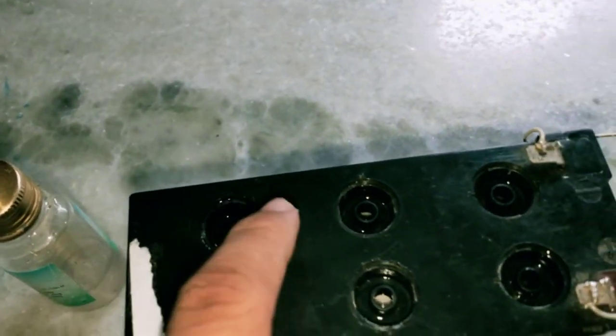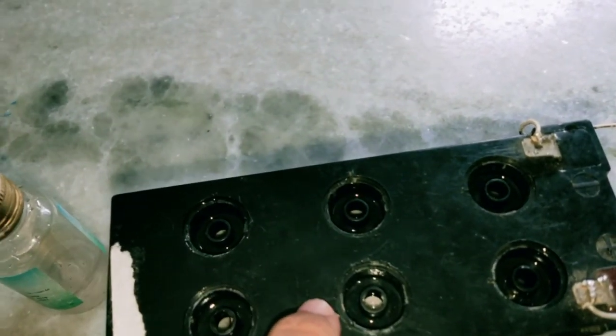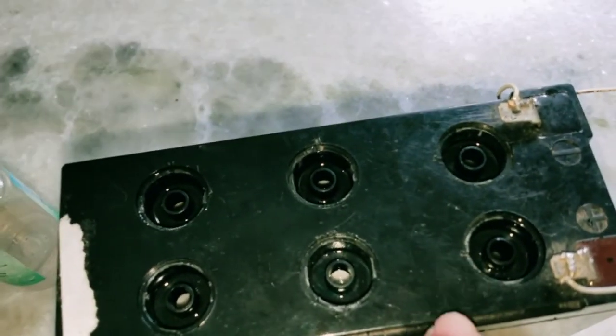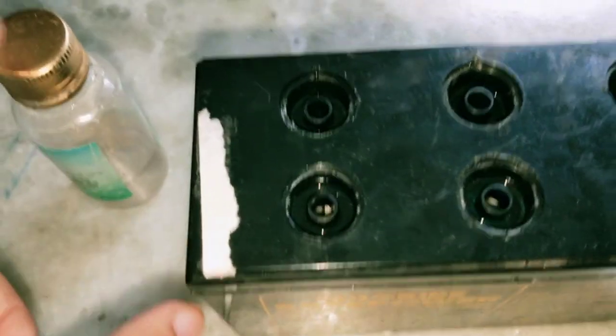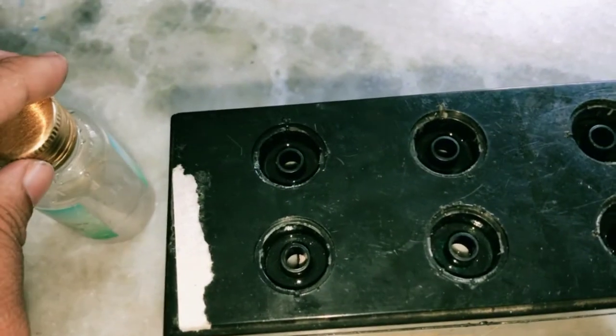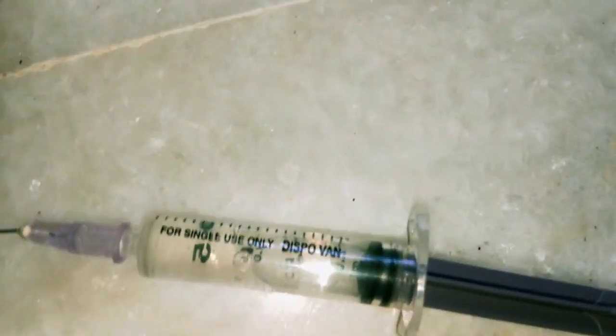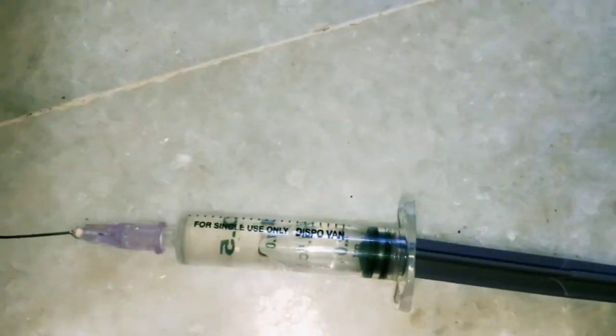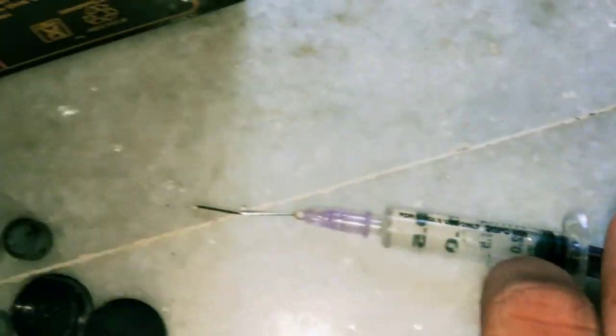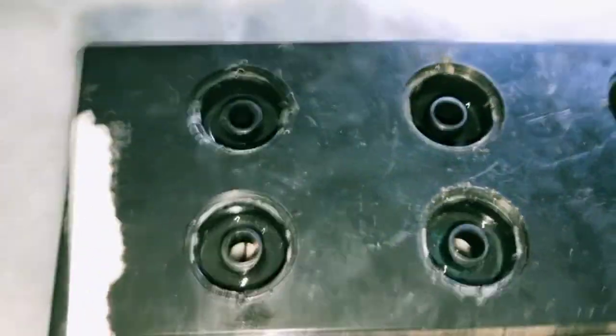Simply we have to put the electrolyte here in these cells by using this injection syringe. Friends, you can see the syringe is filled now, and I pour this liquid here like this.